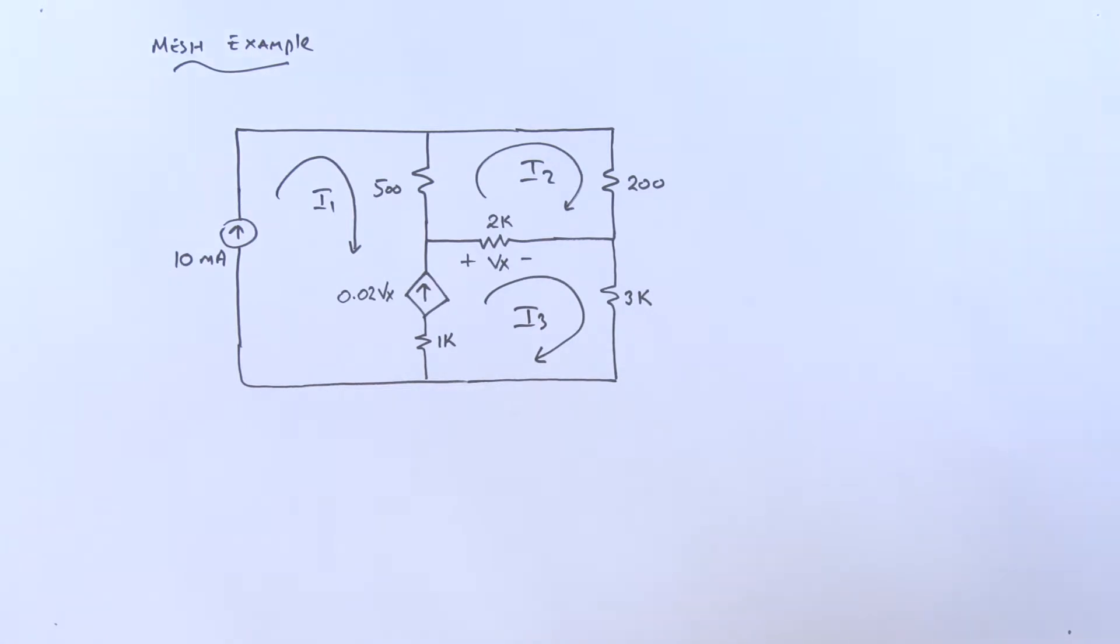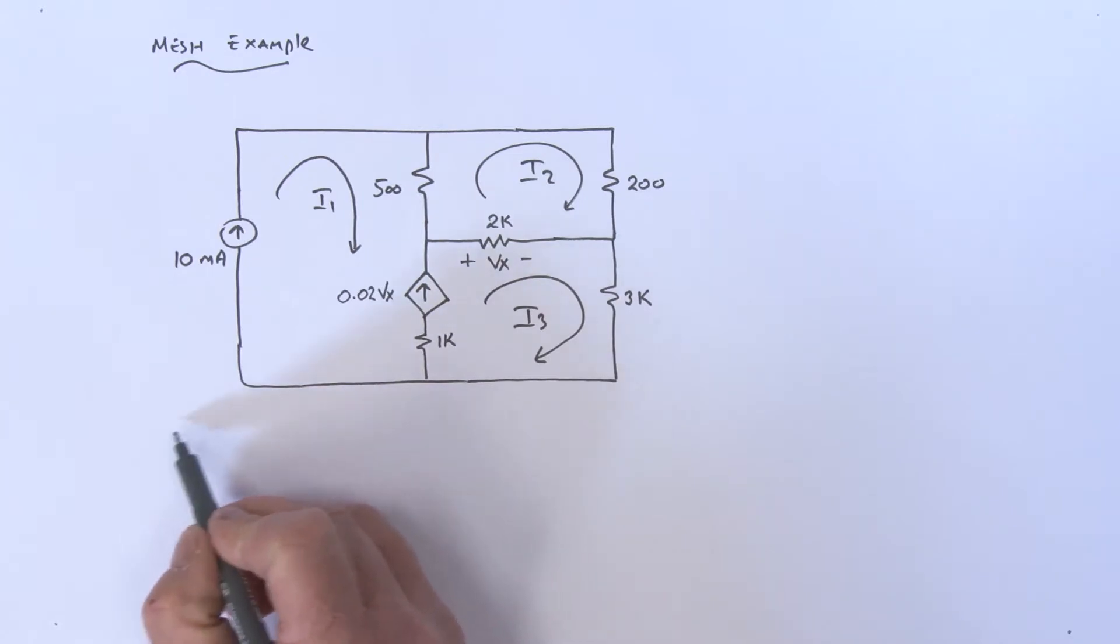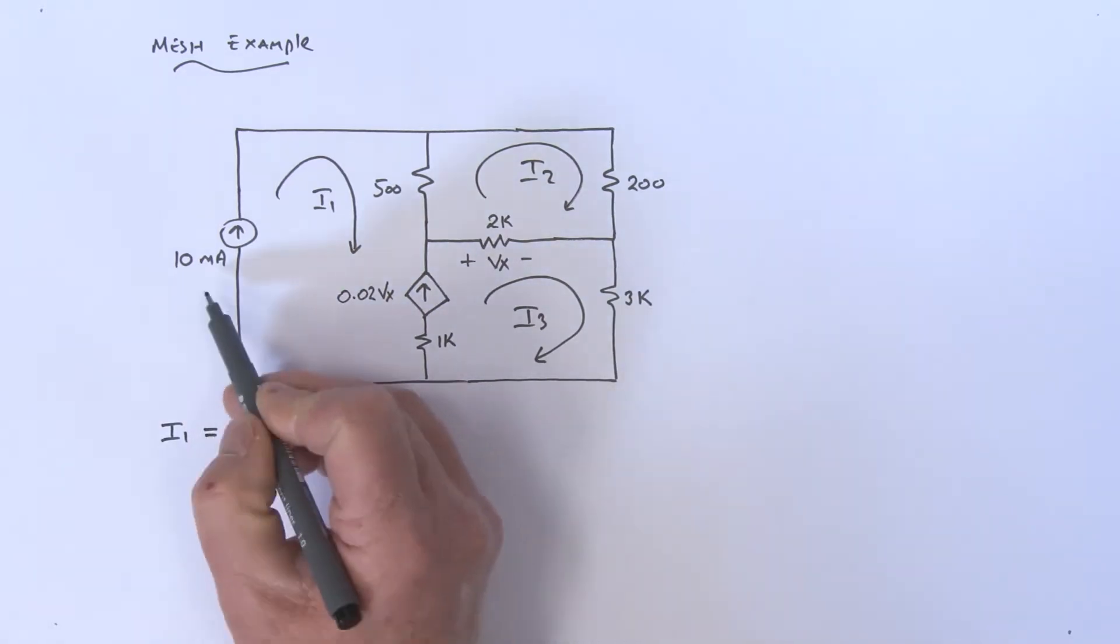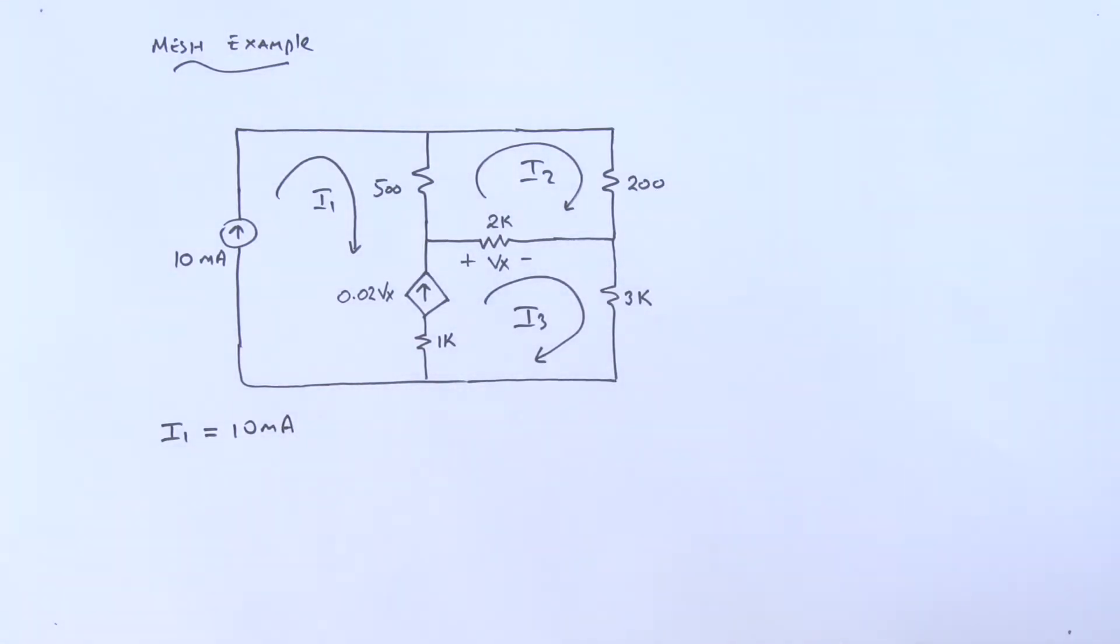Let's see if we can write down what we know. Well, I know that basically i1 has to be equal to this 10 milliamps. So that's pretty easy.